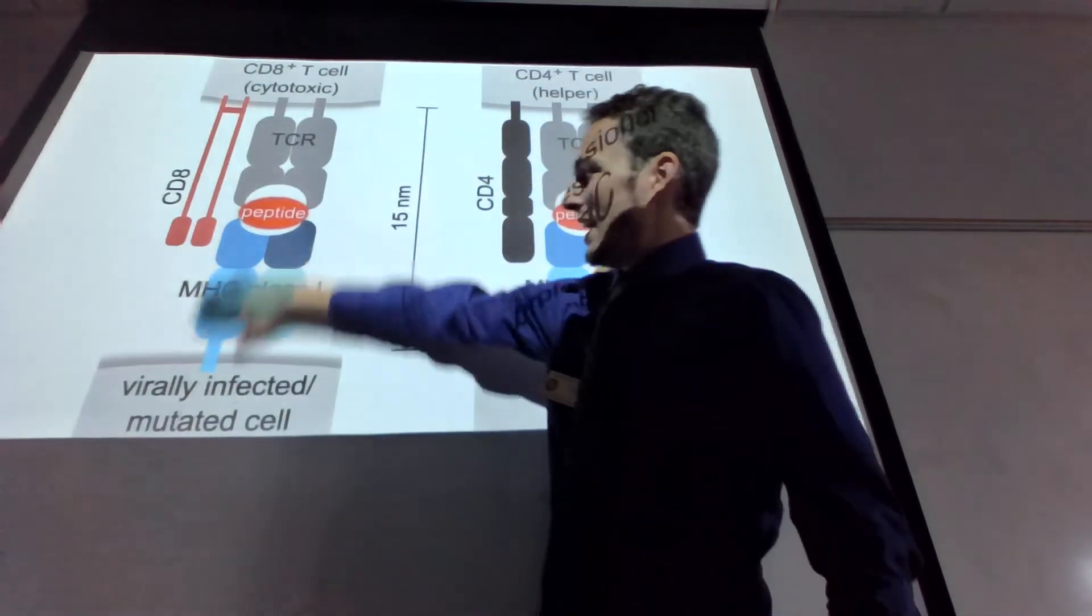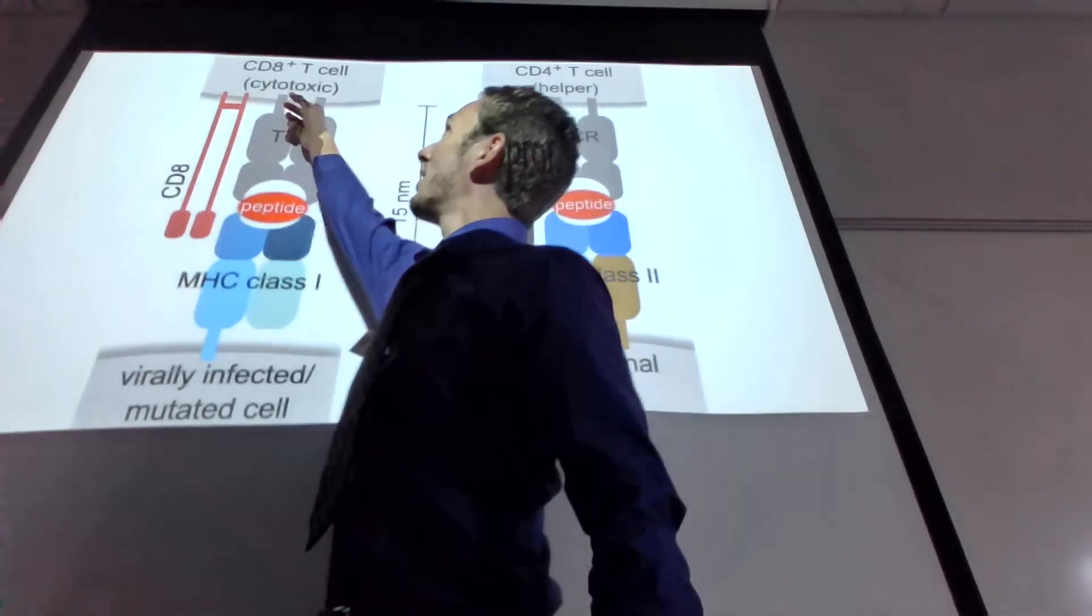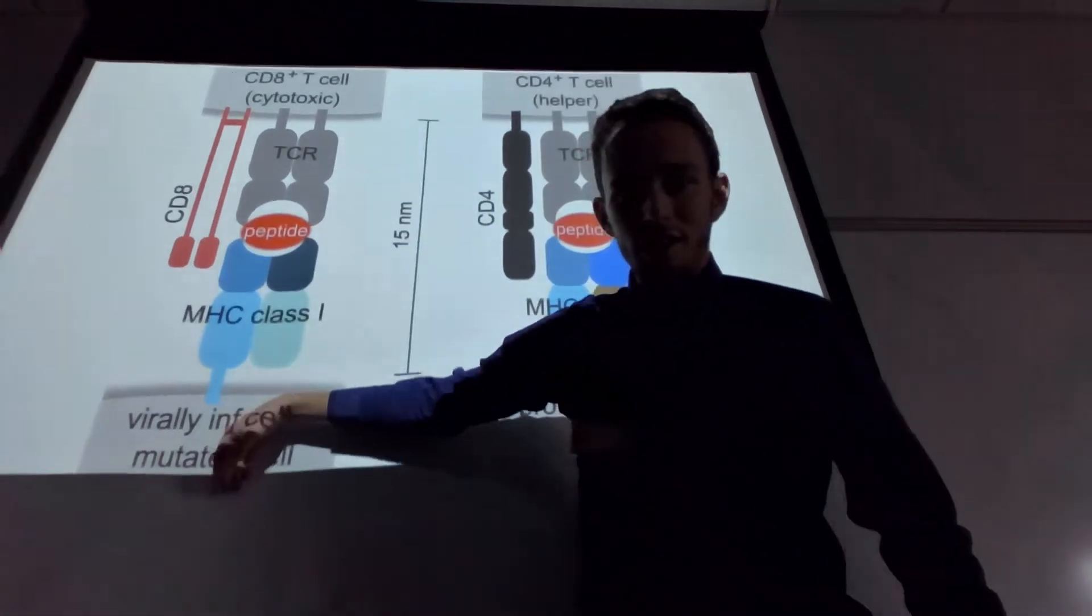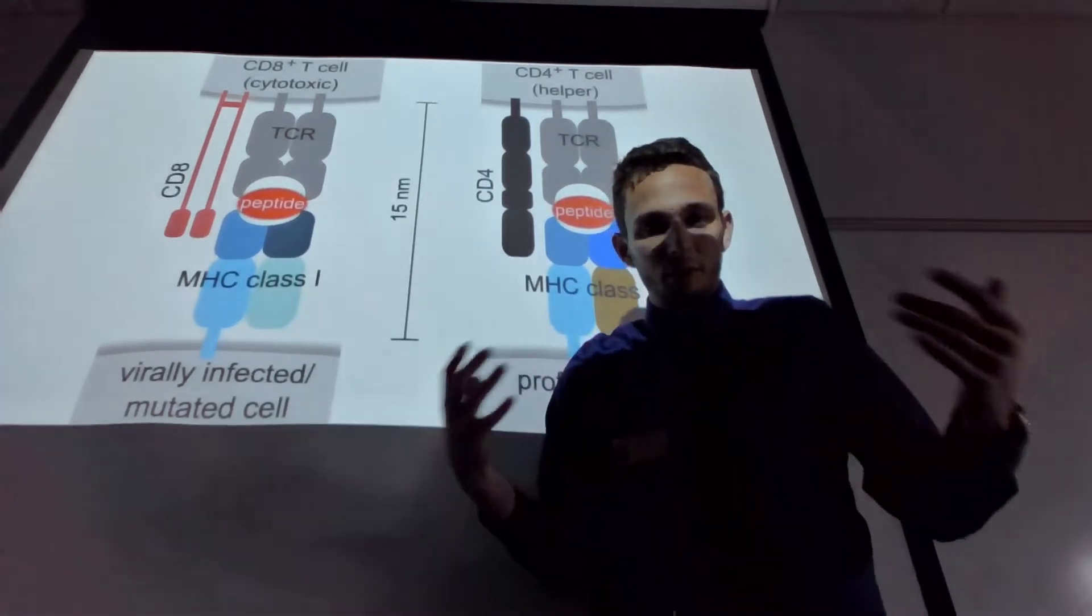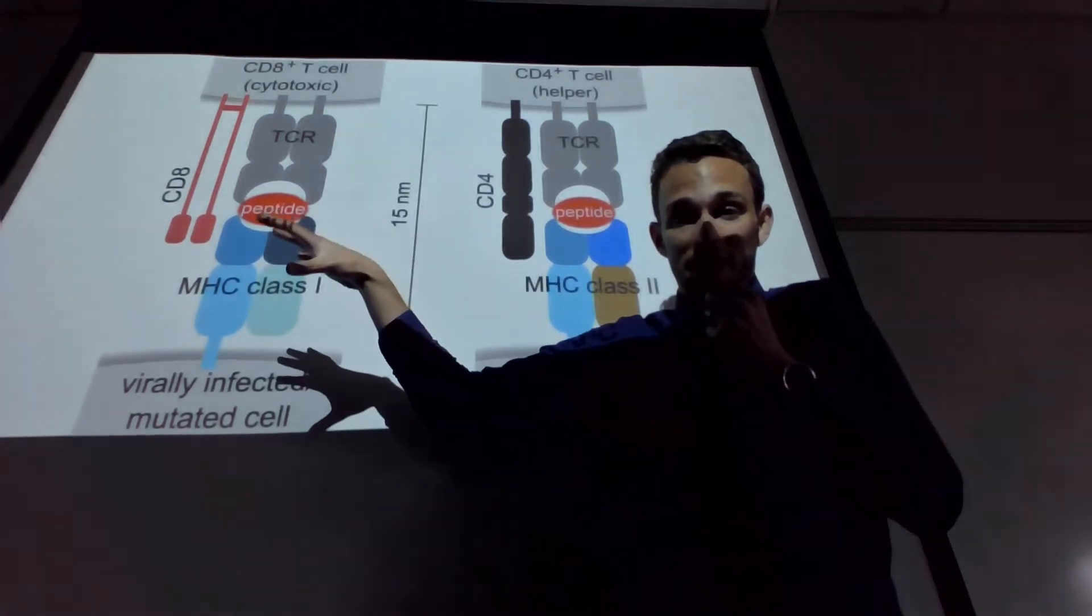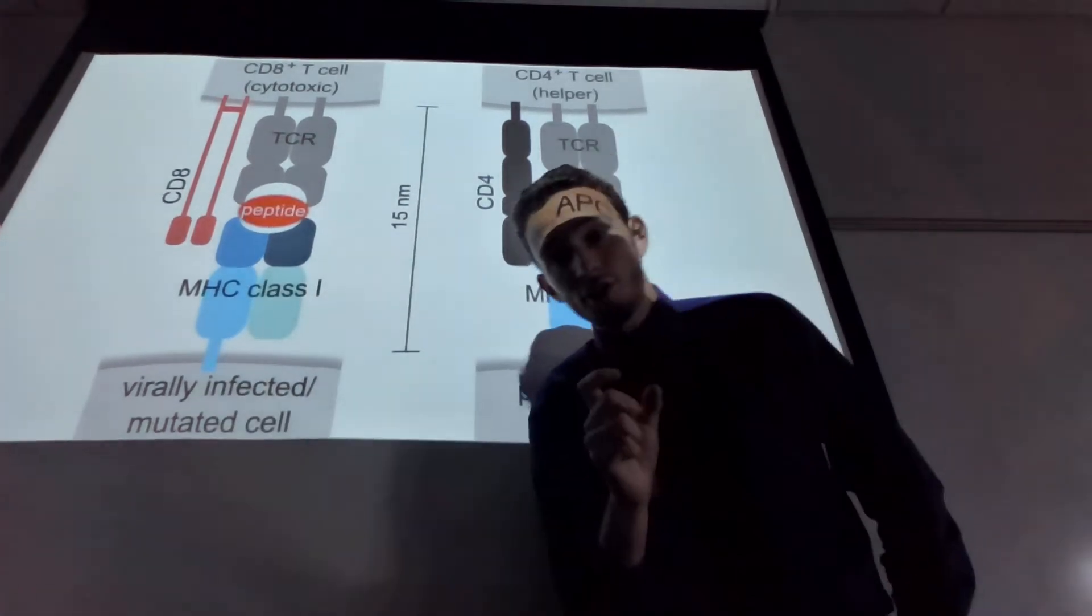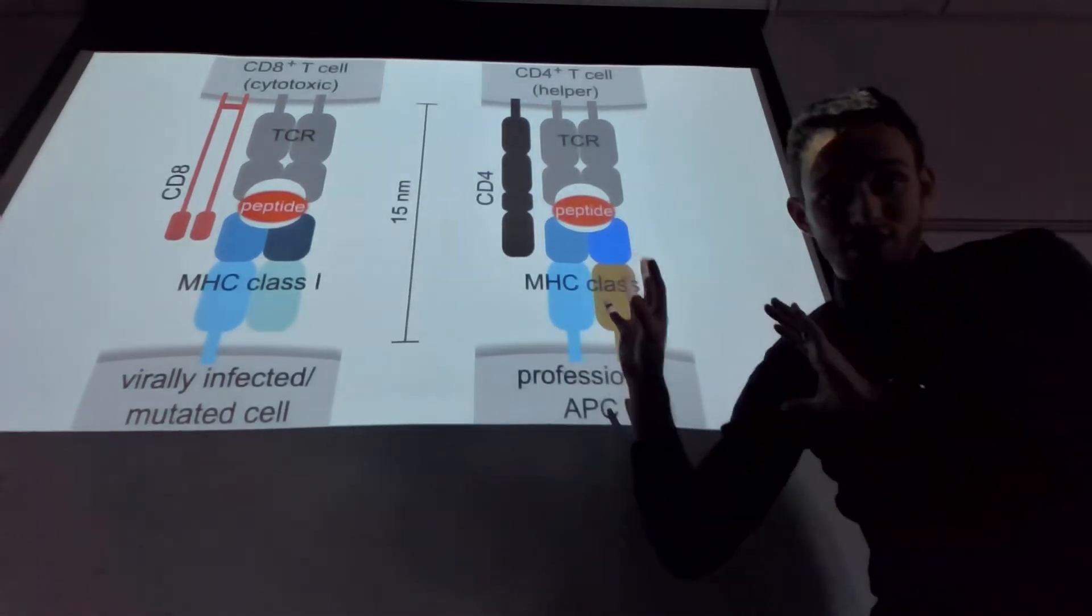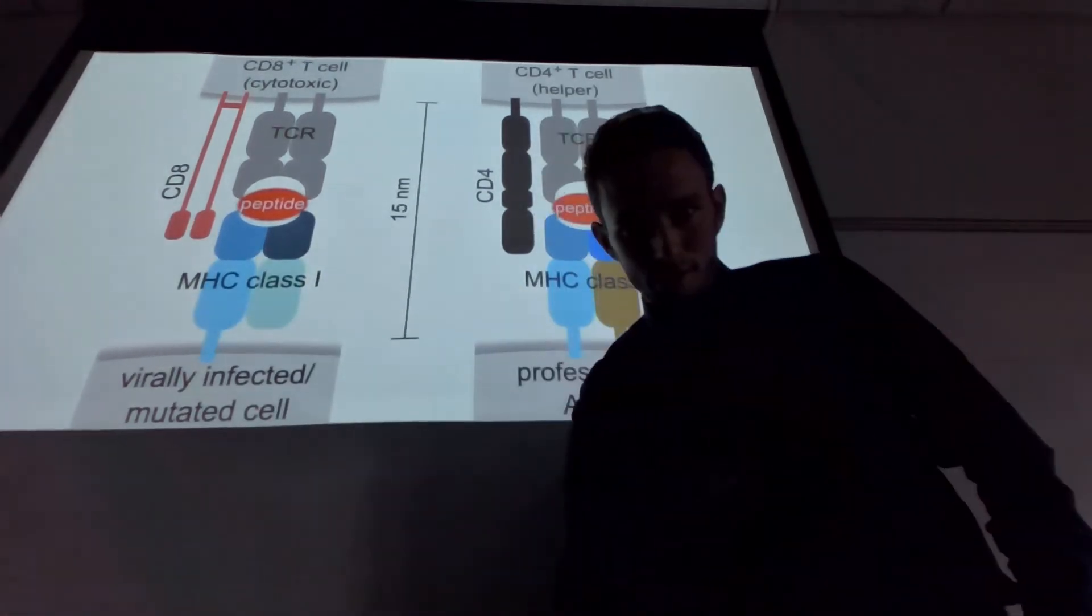When we put that flag from the pathogen onto our flag holder, it stimulates cell destruction. Check this out. Look at the left side. I've got my virally infected cell with its MHC class one with the peptide, that's the antigen, the flag. And what will happen is a cytotoxic T cell will come and bind to that antigen and MHC class one complex. And since it is a cytotoxic T cell, it will basically kill that virally infected cell.